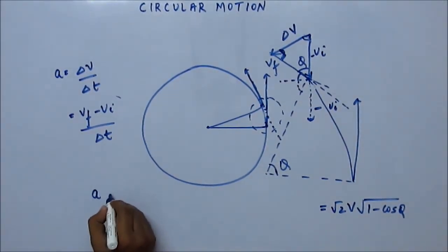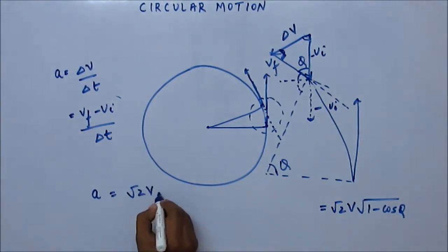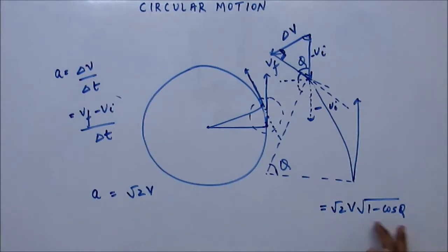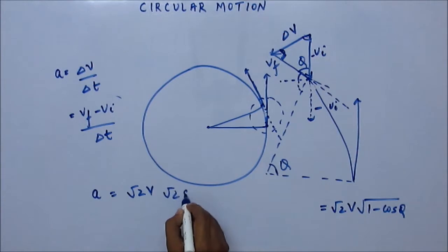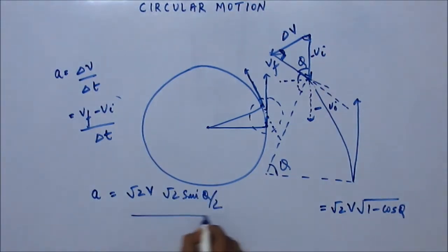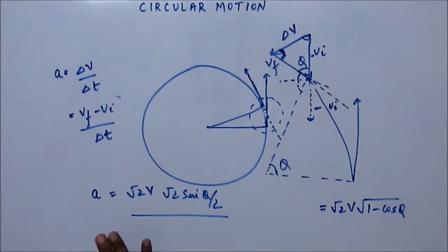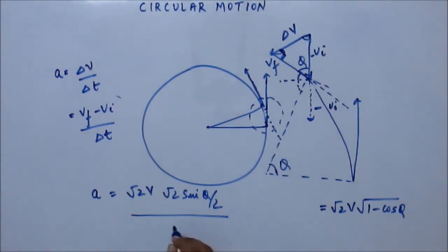So acceleration from here we can see is root 2v root over 1 minus cos θ. Now, 1 minus cos θ is 2 sin²(θ/2), so we can write this as root 2 sin(θ/2) — basic trigonometry. And Δt, the time taken, would be distance upon speed; the angular distance covered is θ upon angular speed ω.